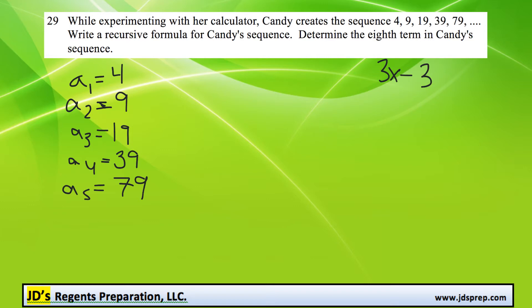So we could test that for the next term. To get from 9 to 19, does it work if we multiply by 3 and subtract 3? Well, 9 times 3 is 27, minus 3 is 24. So that doesn't work.